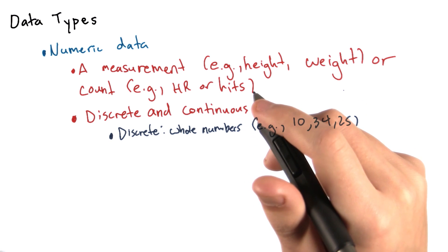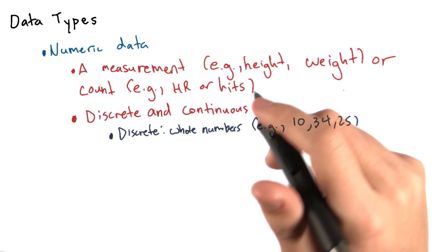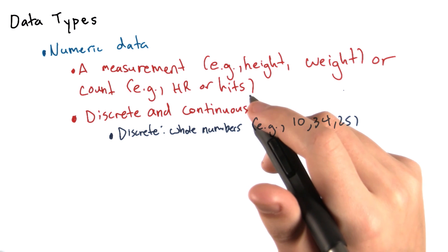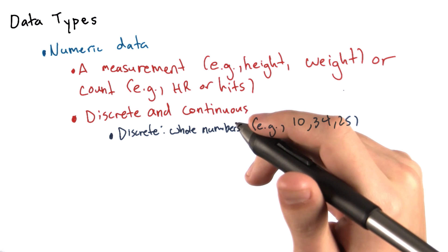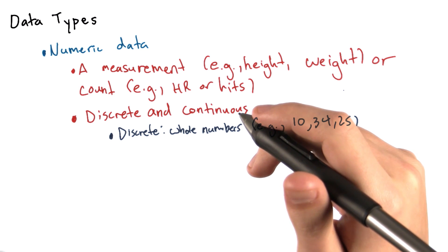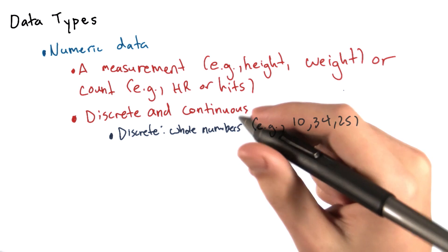On the other hand, continuous data are numbers that can fall anywhere within a range, like a player's batting average, which falls between 0 and 1,000. So a player could have a batting average of 0.250. They could also have a batting average of 357 or 511.